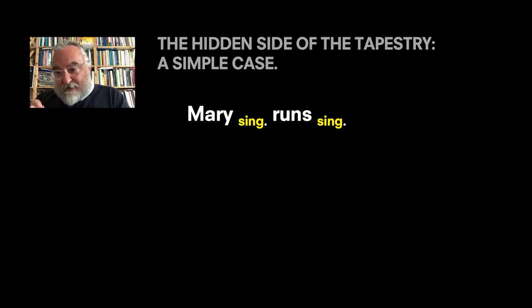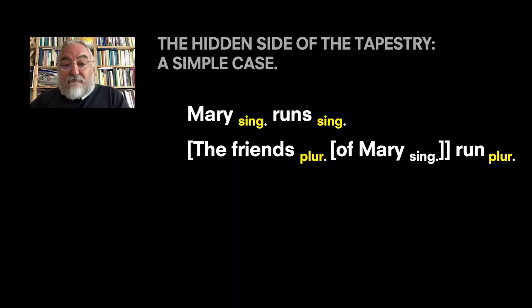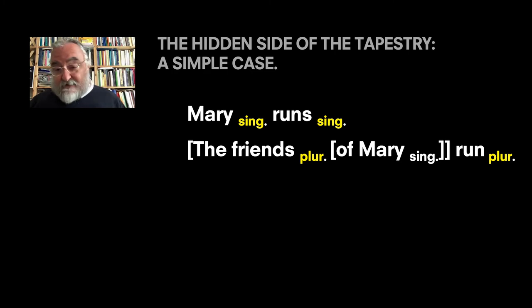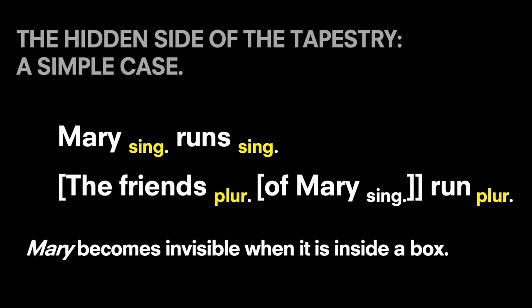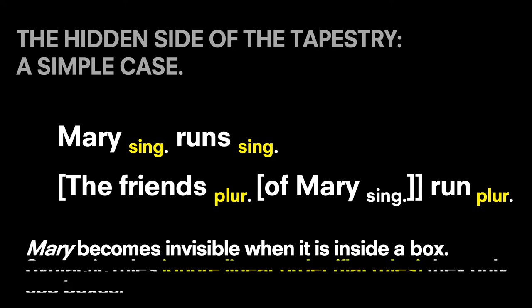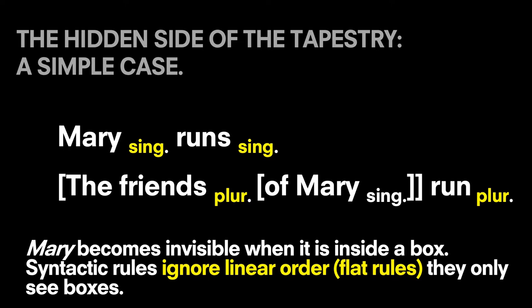Why is this crucial? Suppose I have a noun and a verb and they're both singular — Mary and the verb 'to run.' How do they match? They go like 'Mary runs.' But now here's a trick, a kind of magic. I will show you that I can make Mary disappear. If I say 'the friends of Mary,' as you see here, Mary doesn't count for the verb. What counts for the verb is only the larger box. You can only say 'the friends of Mary run.' You cannot say 'the friends of Mary runs.' Interestingly, this process where Mary becomes invisible inside a box can be extended to all possible human rules.